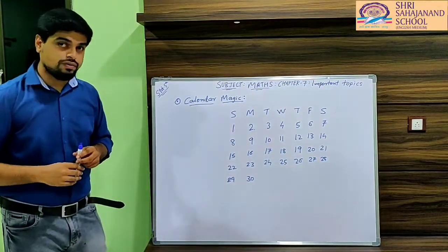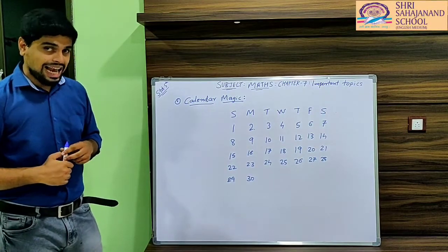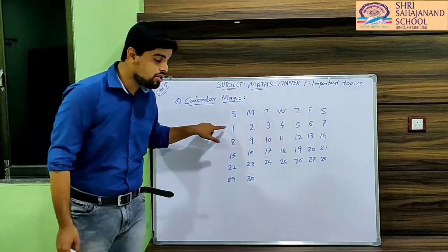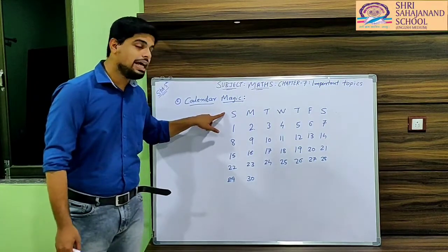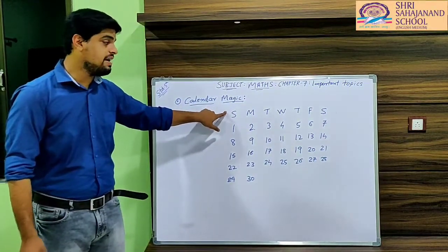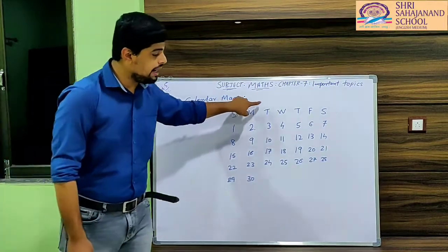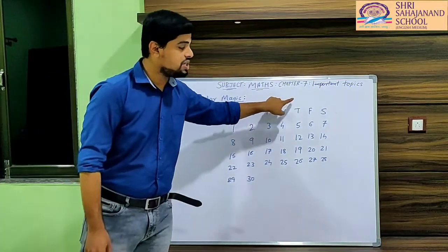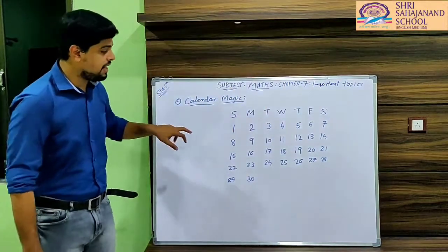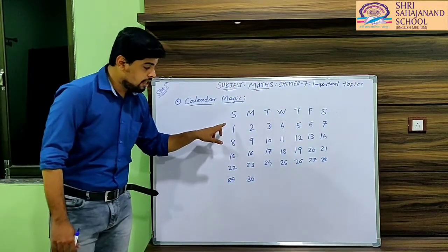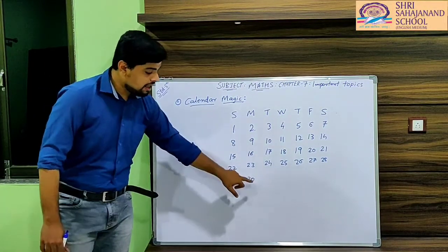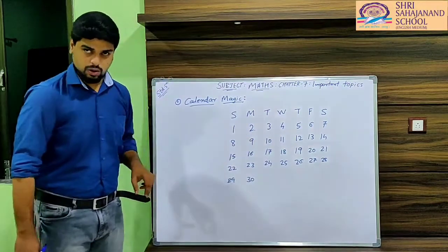I hope all of you know what a Calendar is. A calendar is a thing that shows the relationship between date and day. I have taken 7 days of a week: Sunday, Monday, Tuesday, Wednesday, Thursday, Friday, and Saturday. And I have taken a month of 30 days. That month starts on Sunday and ends on Monday.